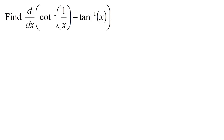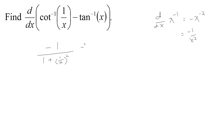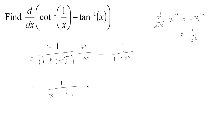Now for arccot and arctan: the derivative of arccot is negative 1 over 1 plus the variable squared. Here the inside function is 1/x, so we plug that in and multiply by the derivative of 1/x, which is the derivative of x^(-1), giving negative x^(-2) or negative 1/x². Then we subtract the derivative of arctan(x), which is 1 over 1 plus x². A negative times a negative gives positive, and multiplying through by x² we find the two expressions are equal, so the result is 0.